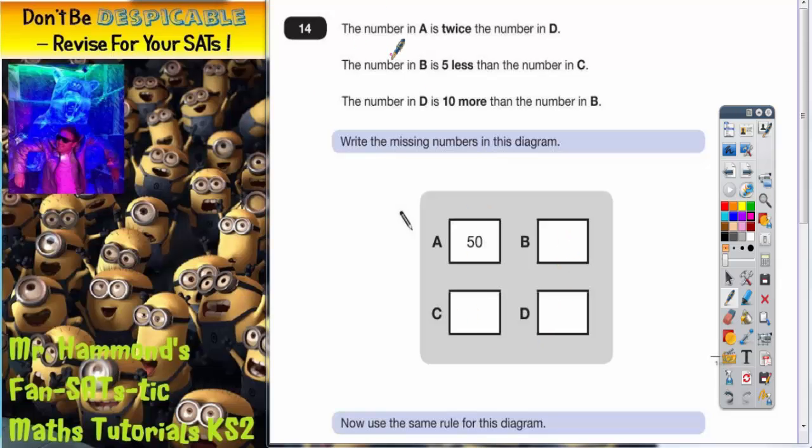So the number A, the number in A is twice the number in D. Well, A is 50. So if A is 50, and that's twice whatever D is, what number is 50 twice the number of? Well, 50 is 2 lots of 25, so D must be 25.